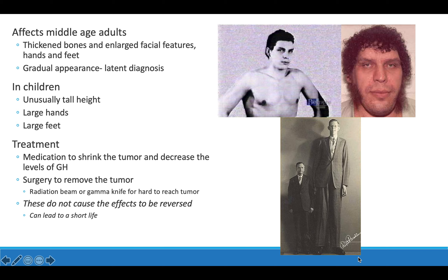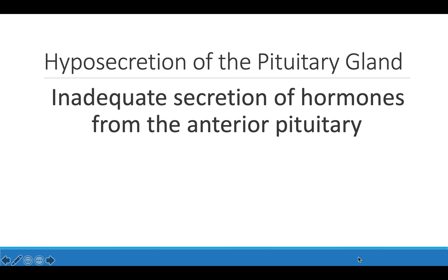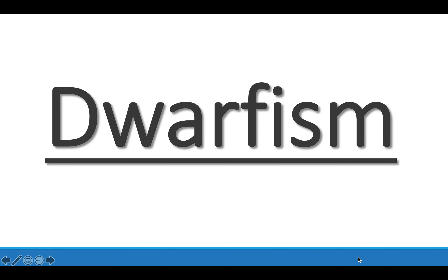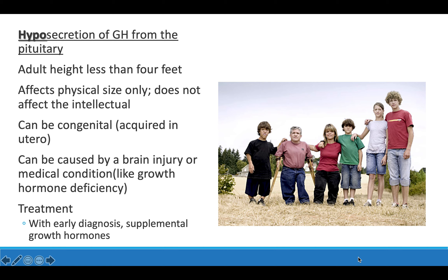Unfortunately, treatment cannot reverse effects like large hands or feet, but it can stop the condition from progressing. This can also lead to a shortened life. Hyposecretion of the pituitary gland — specifically the anterior pituitary — leads to dwarfism, where not enough growth hormone is released. This is categorized in adults who are less than four feet tall, and it only affects their physical height and size, not their intellectual ability. This can occur in utero, or be caused by a brain injury or medical condition. Treatment involves early diagnosis and supplementing the growth hormones that are lacking.